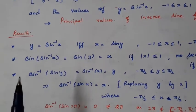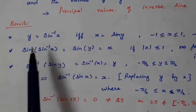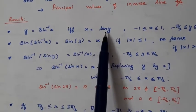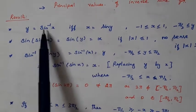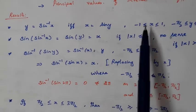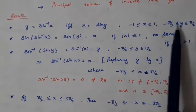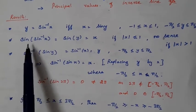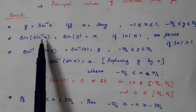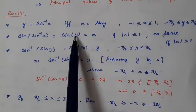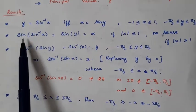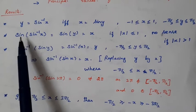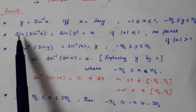Now let us see some results. The first is the definition: y = sin⁻¹(x) is possible only if sin y = x, where x ∈ [−1, 1] and y ∈ [−π/2, π/2]. Then, sin(sin⁻¹(x)): since sin⁻¹(x) = y and sin y = x, we get sin(sin⁻¹(x)) = x. This means because they are inverse to each other, sin(sin⁻¹(x)) = x.